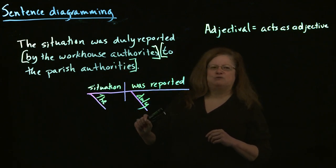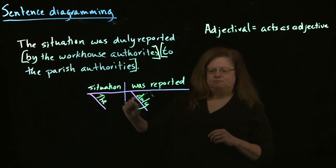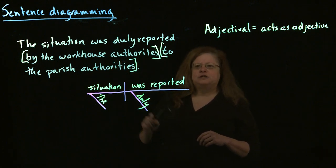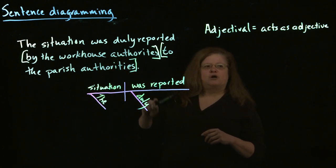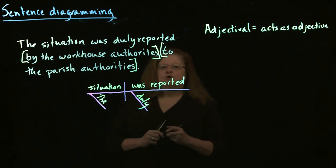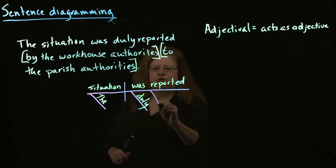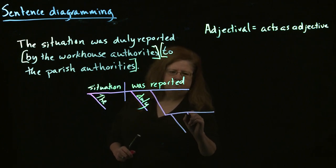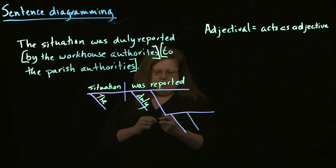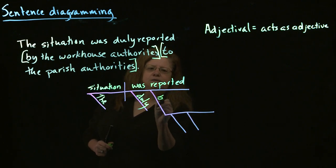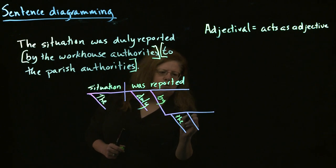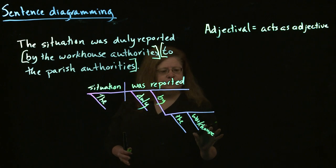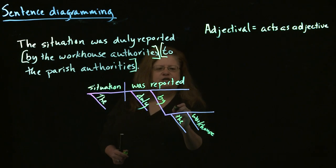Now we've got to figure out where those prepositional phrases are going to go. In this case, 'by the workhouse authorities' is actually describing 'reported,' so we attach that prepositional phrase to the verb. We have 'by the workhouse' — and 'workhouse' is an adjective here, describing what kind of authorities.